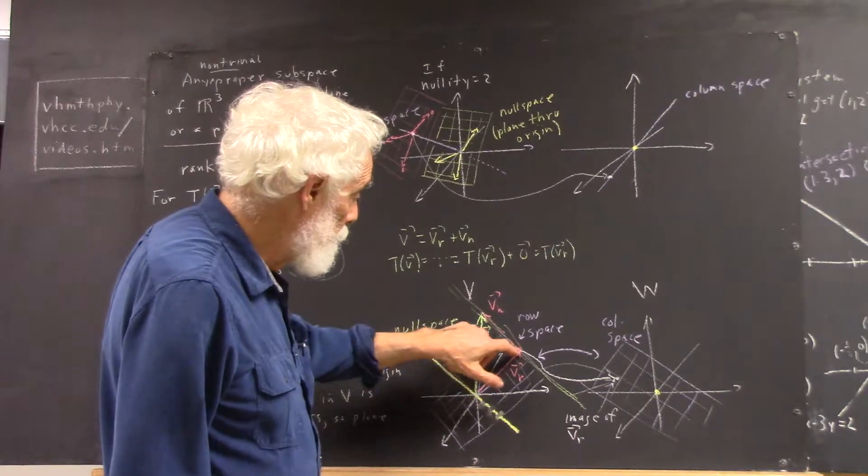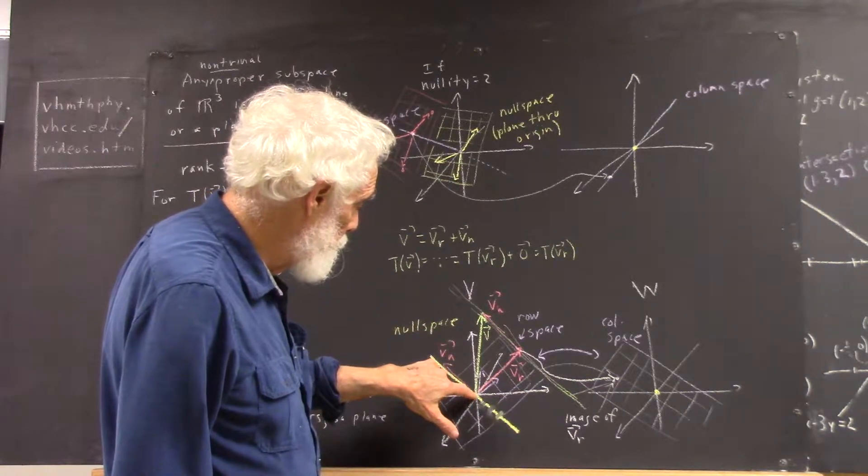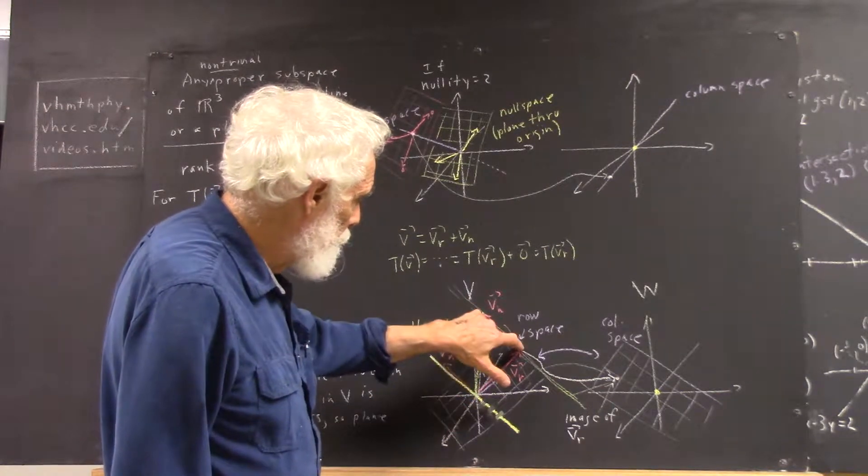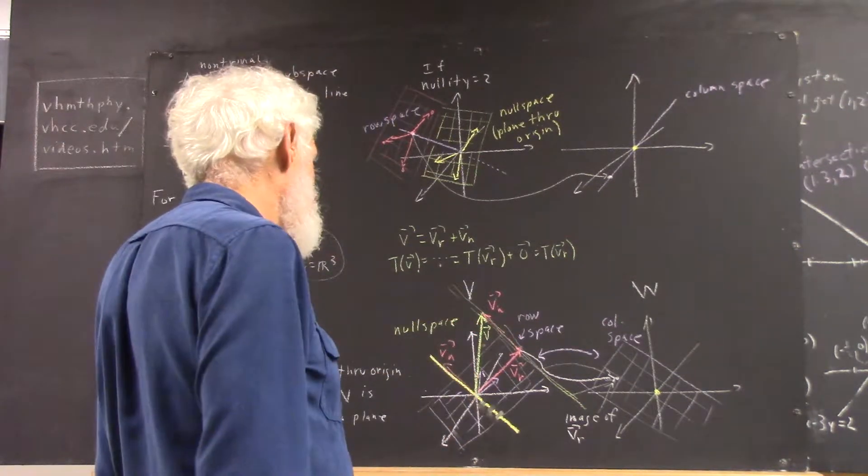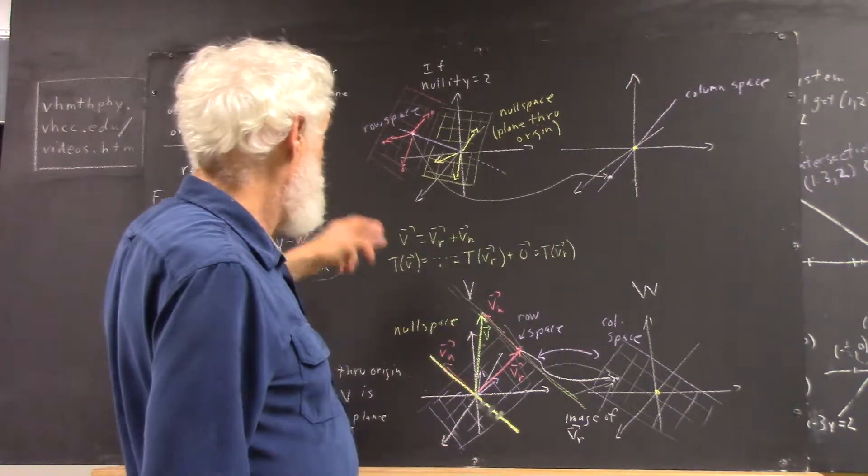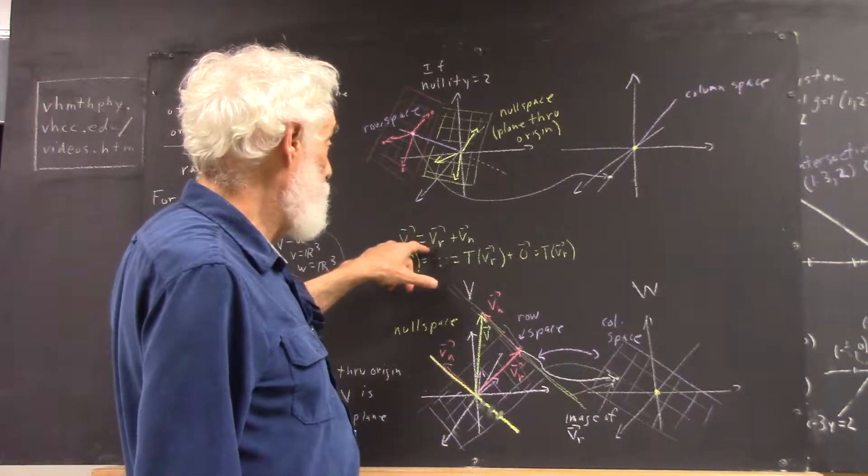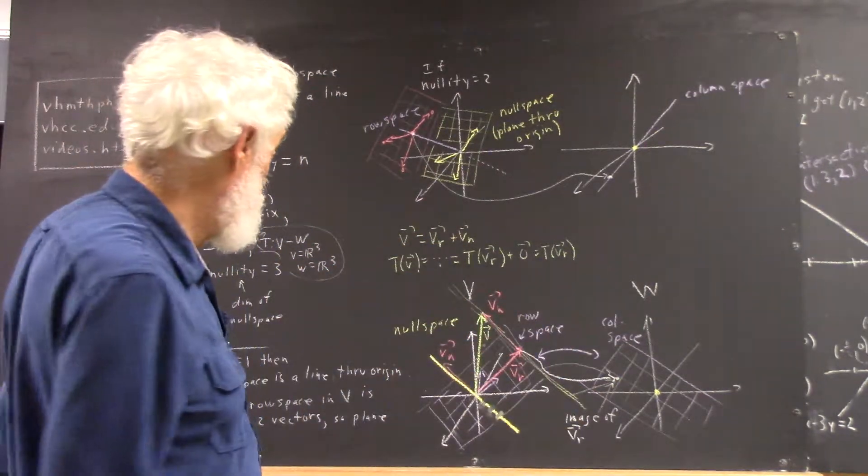So we take this vector in the plane and this vector in the null space. We add them together head to tail, and we get this vector that I call V. Well then, if V is a sum of a Vr plus a Vn, just like we had in R2,